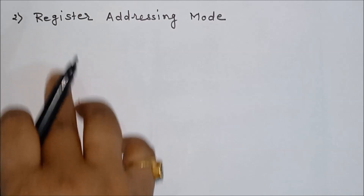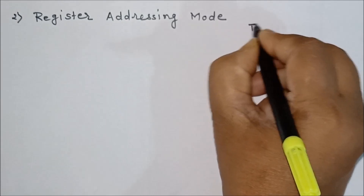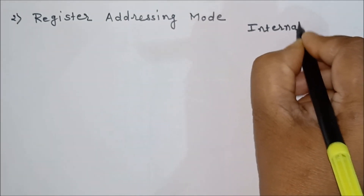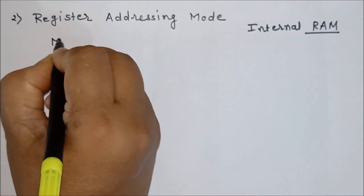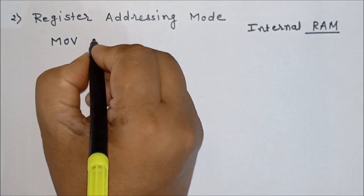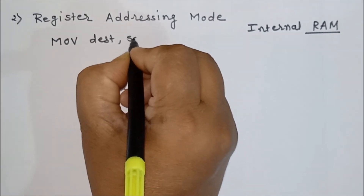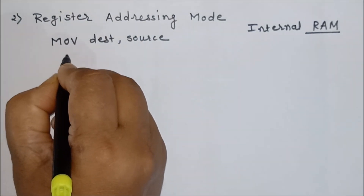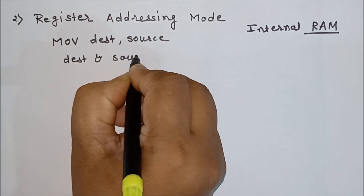The second addressing mode is register addressing mode. We are again discussing this for internal RAM memory. In register addressing mode, as an example we will consider the MOV instruction. The format of MOV is: MOV destination, source. In register addressing mode, both destination and source should be registers.